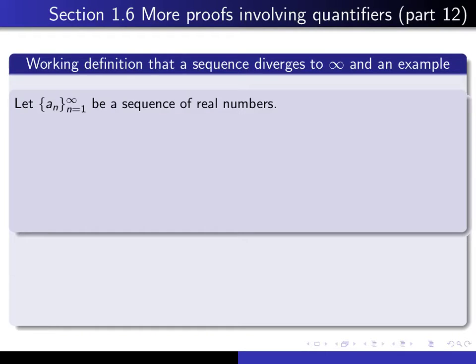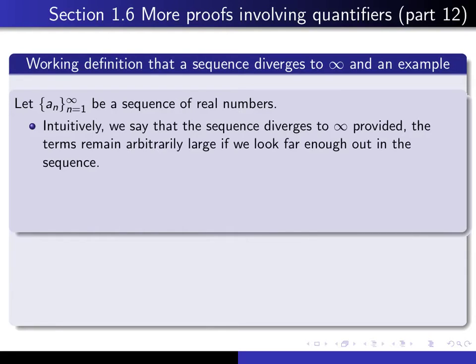So let's start with an infinite sequence of real numbers. Intuitively, we would like to say that the sequence diverges to infinity if, when we look far enough out in the sequence, the terms not only become arbitrarily large, but they remain arbitrarily large.